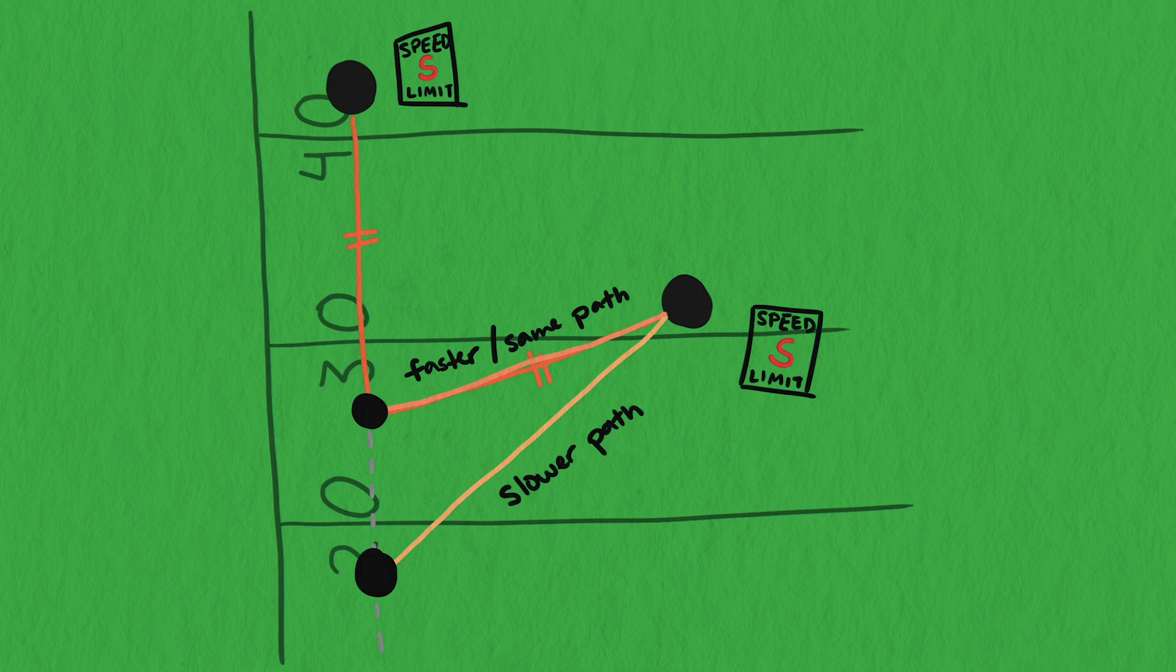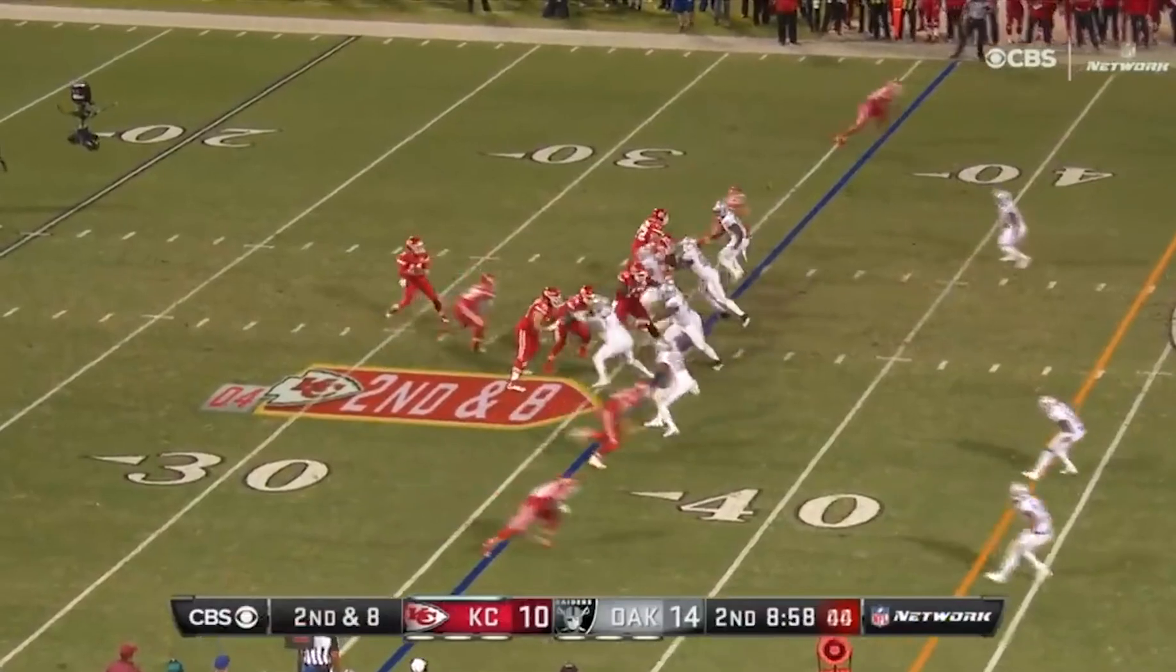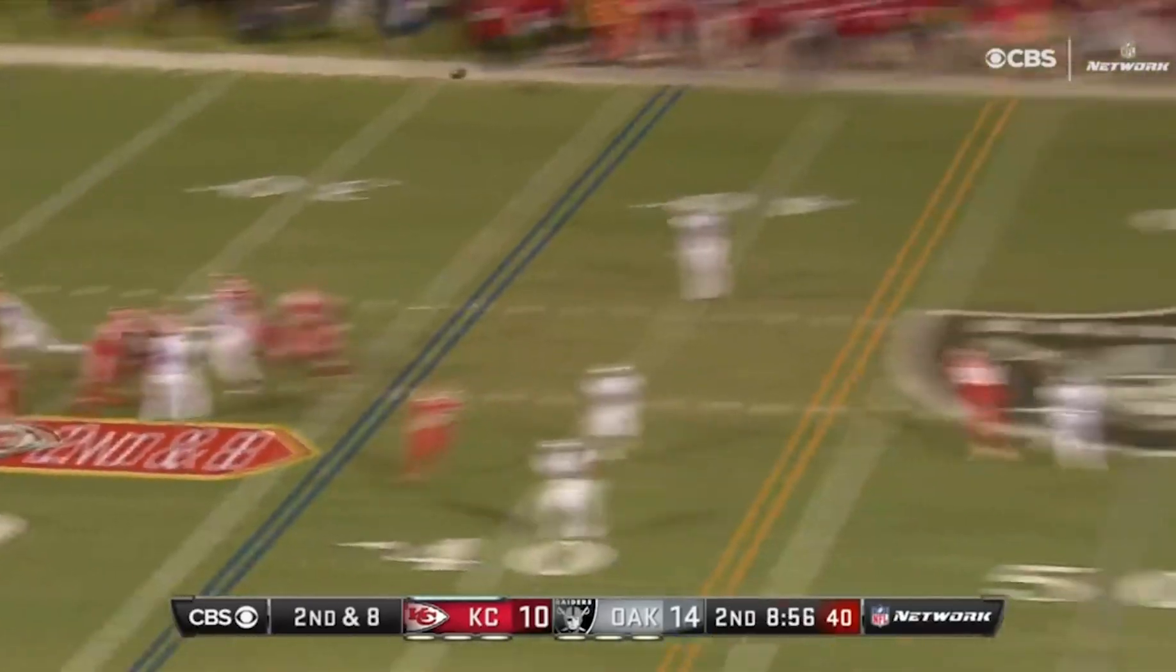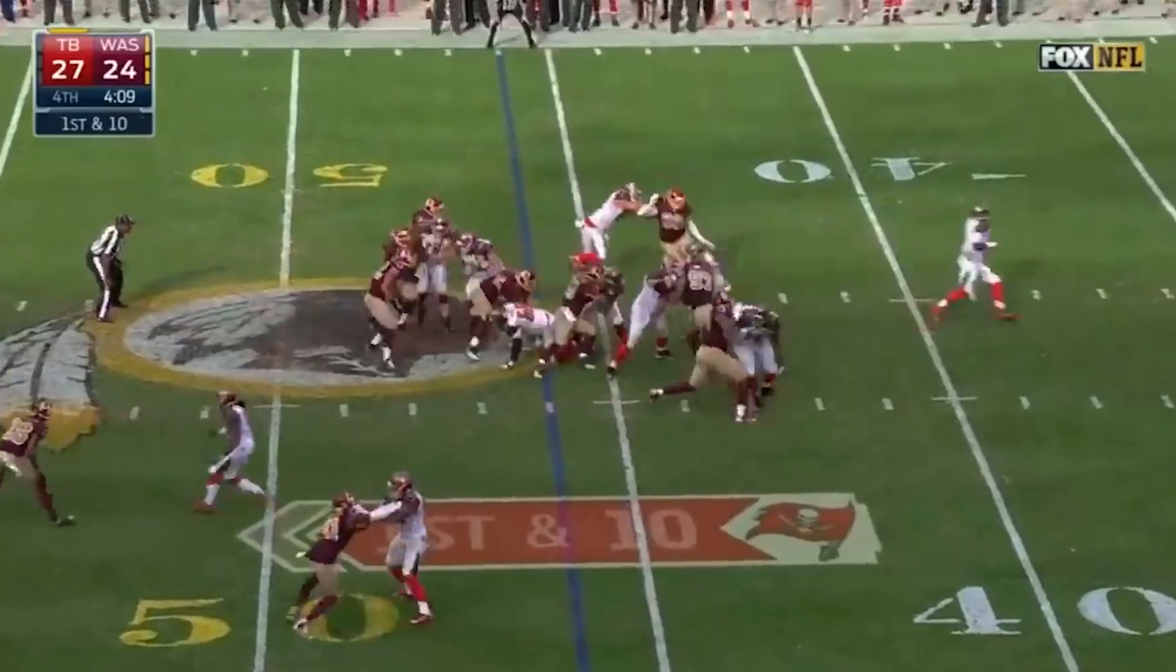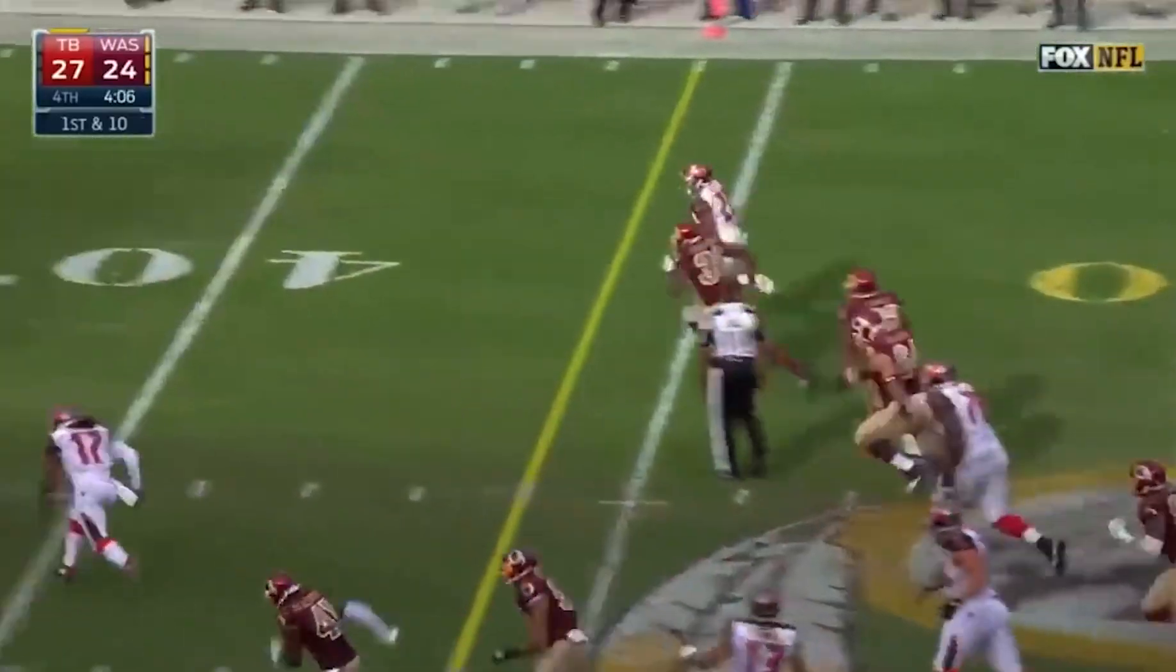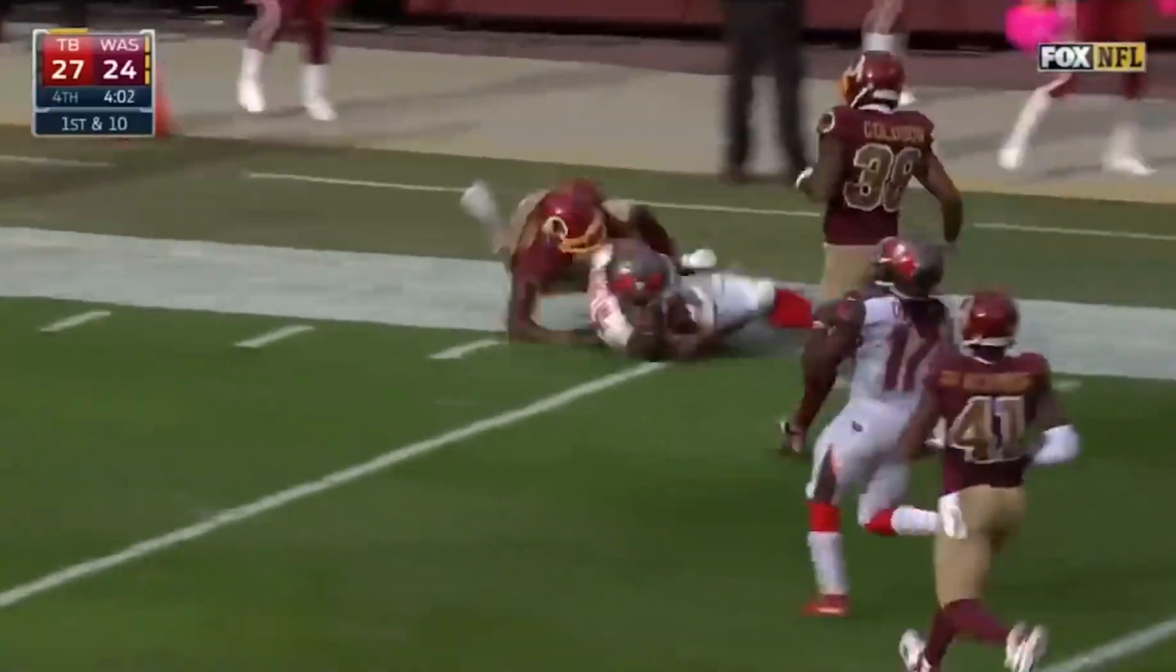One way to think about this isosceles triangle path is that it is the riskiest of all possible paths. It's risky because if estimated a little too far upfield, or if the ball carrier is faster than the DB, then the DB could miss the tackle. But if the DB can make the tackle on this path, it keeps the opposing team at the shortest gain possible. It's high risk, but high reward.